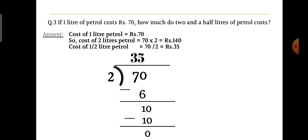Now let's do the third sum. If one liter of petrol costs rupees 70, how much do two and a half liters of petrol cost? The cost of one liter of petrol is rupees 70. So cost of two liters of petrol will be 70 × 2 = 140 rupees. Now we want to find the cost of two and a half liters, so we need to also find the cost of half a liter.